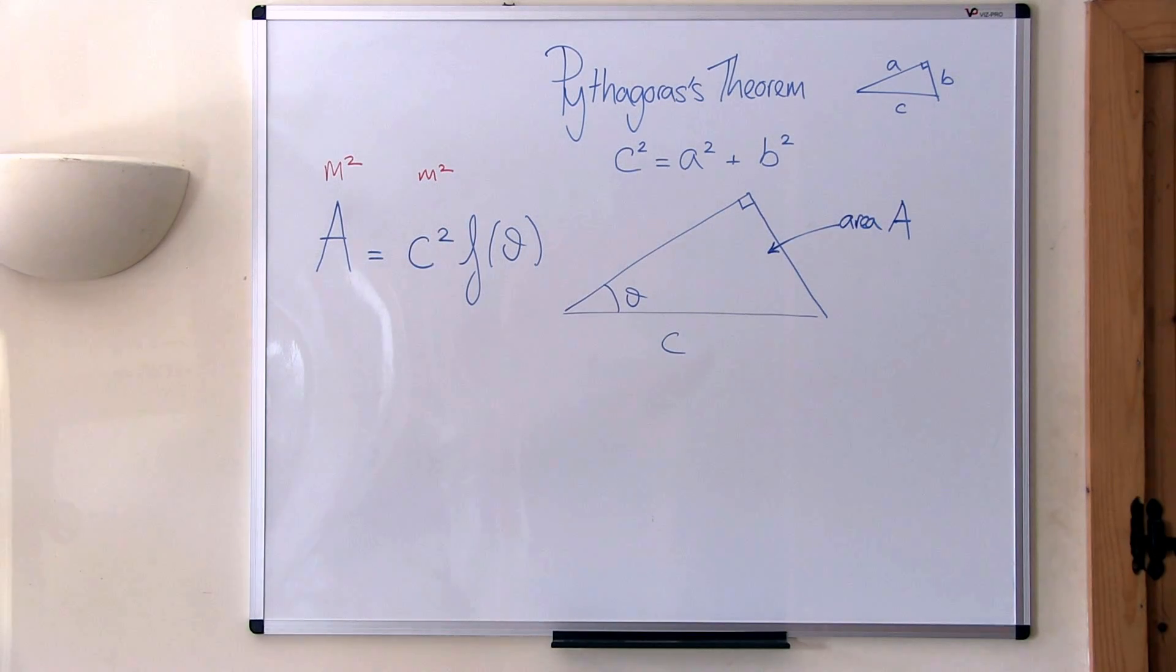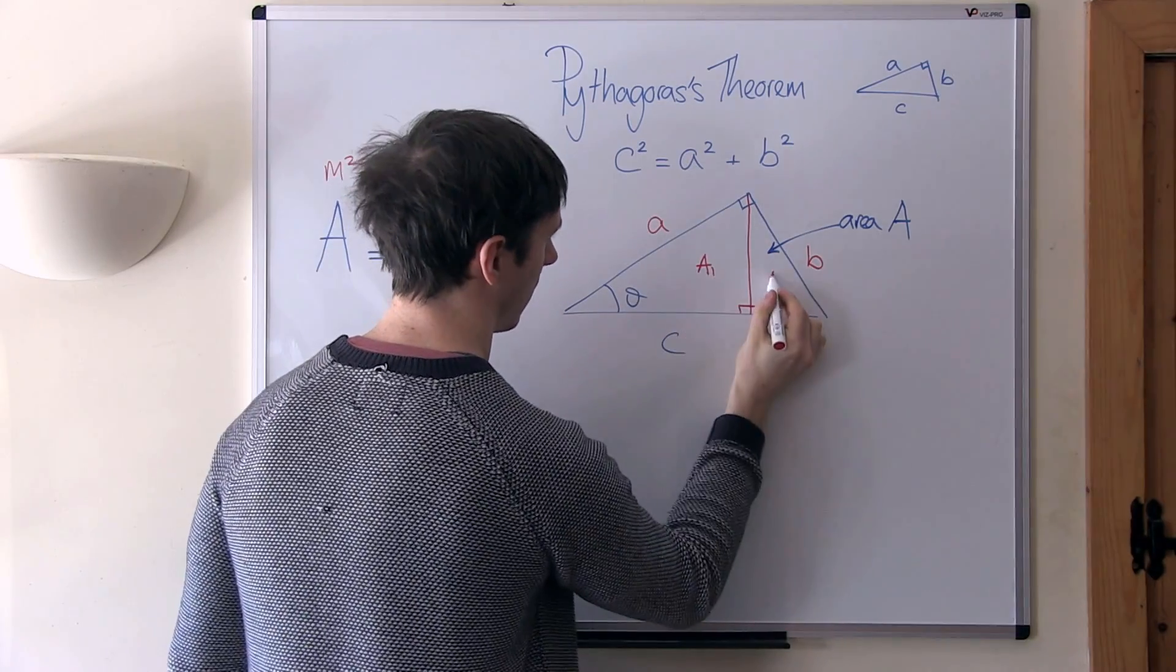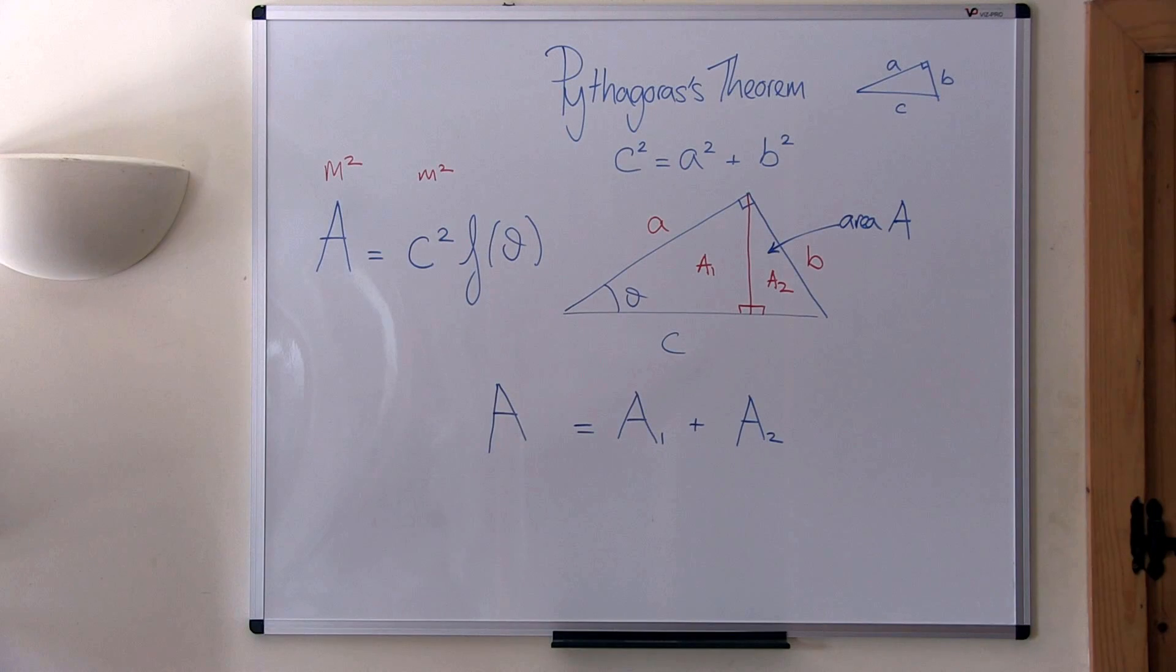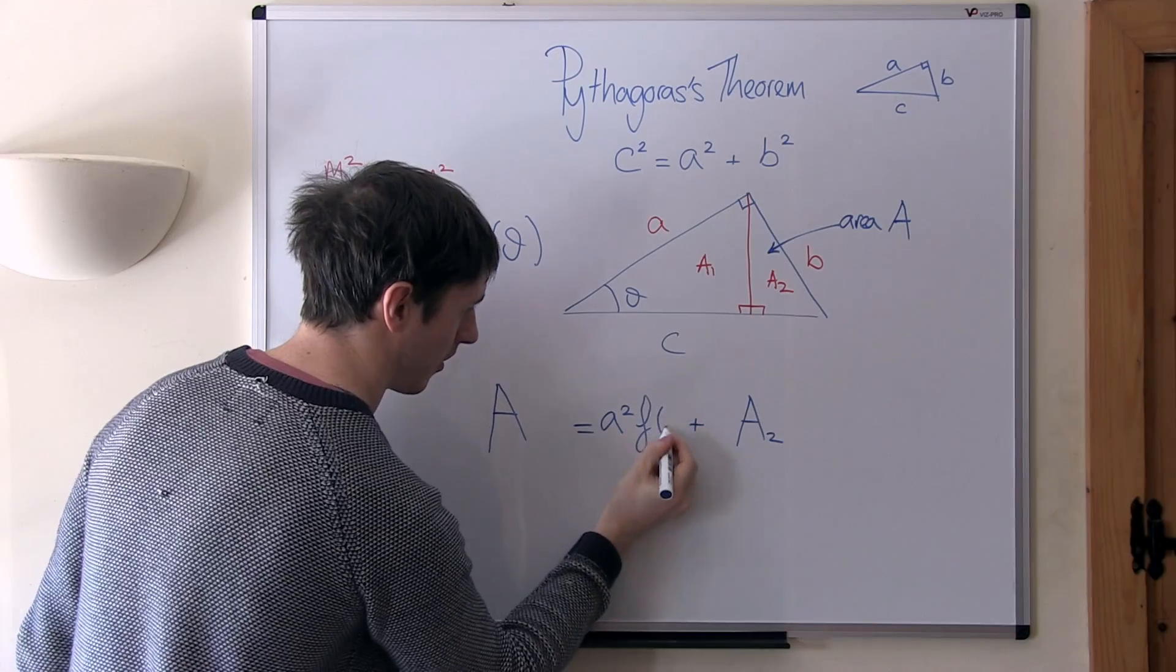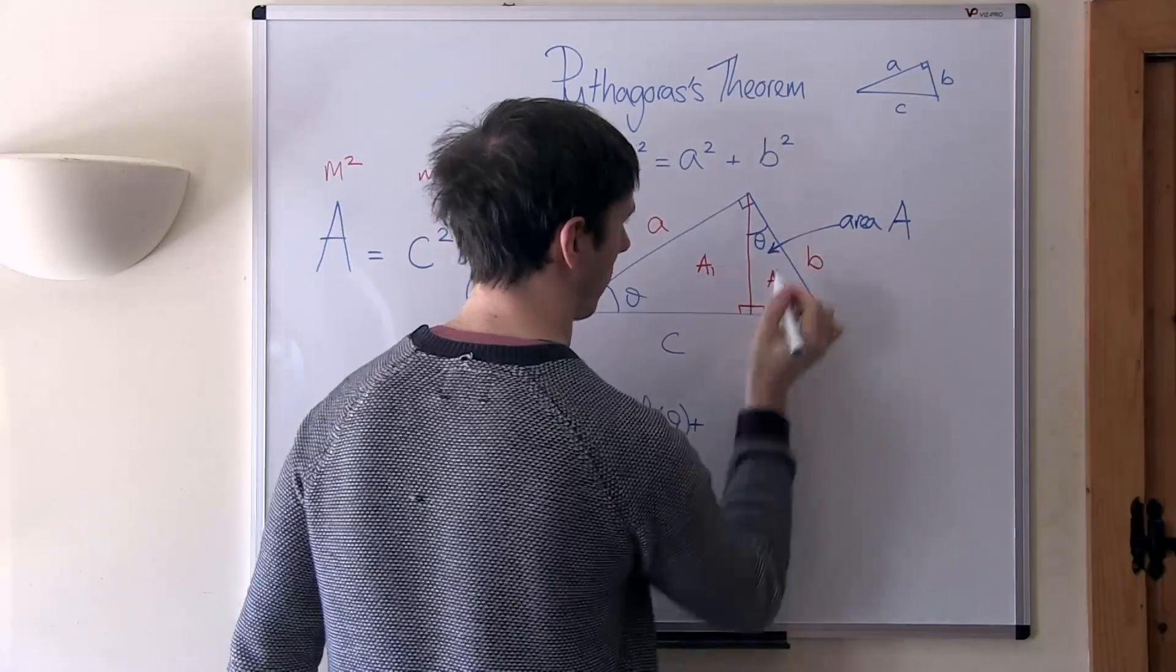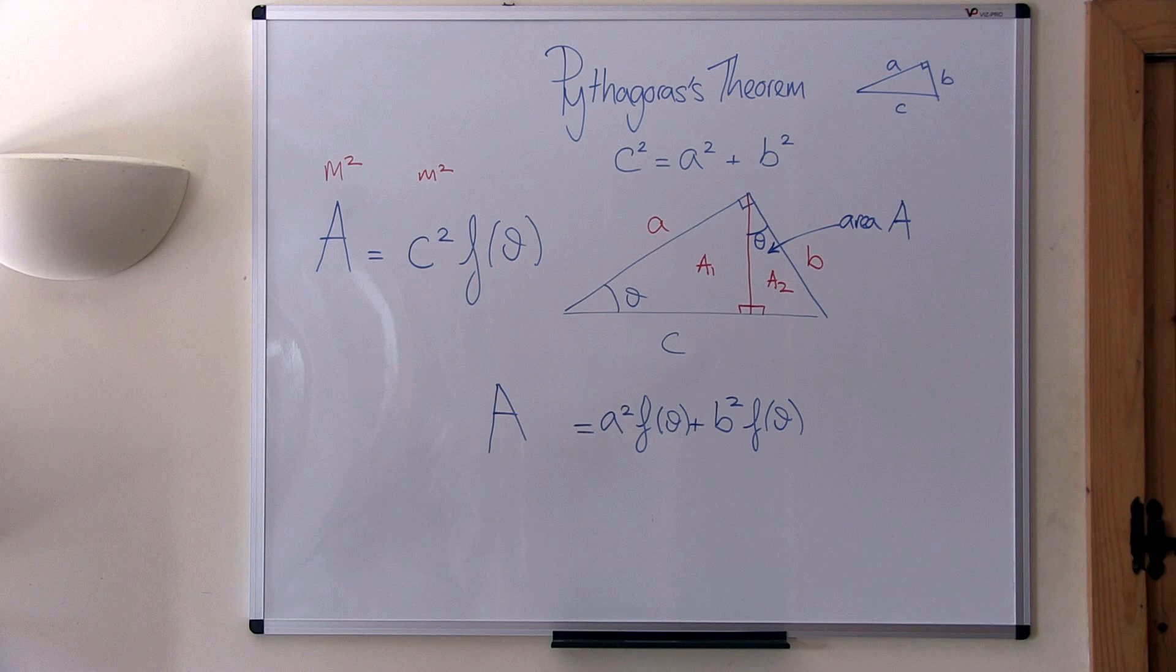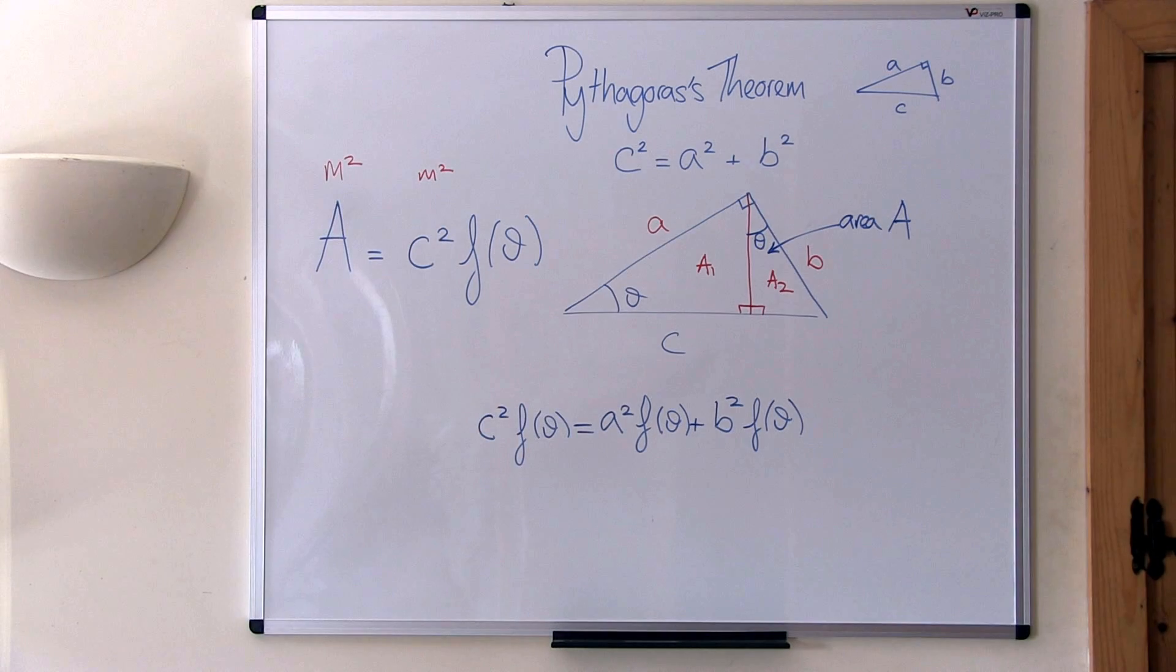We just need one more trick to complete this proof, and that is this line. The area of our original triangle is just the sum of the areas of the two smaller triangles. But these are both right-angled triangles, and we've just found a formula for the area of a right-angled triangle. A1 is equal to the length of the hypotenuse squared times f of theta. That's a squared times f of theta, and if you agree with me that this angle here is also theta, then A2 is equal to b squared times f of theta. And after substituting in the equation for the area of the largest triangle, you should be able to see what to do next.